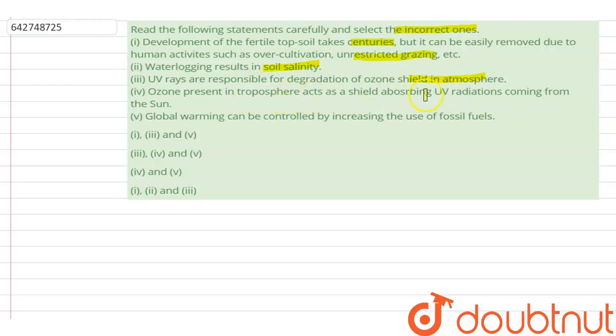Ozone present in the troposphere acts as a shield absorbing UV radiations coming from the sun. Global warming can be controlled by increasing the use of fossil fuels.